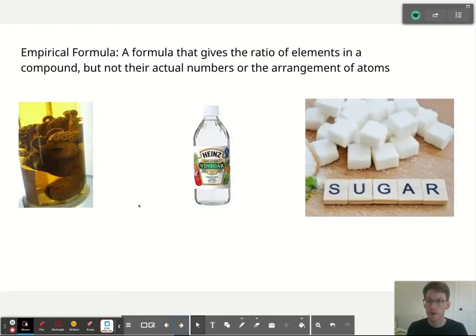For example, we can actually consider something called formaldehyde which is used to preserve, in this case an octopus. Its empirical formula is CH2O and that is actually the same as the empirical formula of vinegar. It's also the same as sugar.